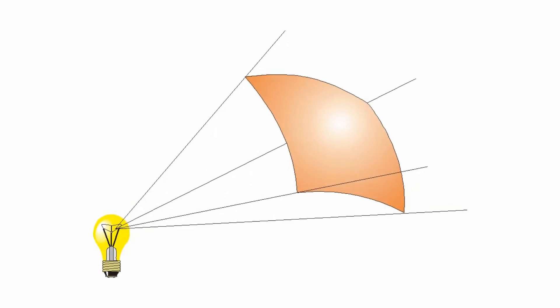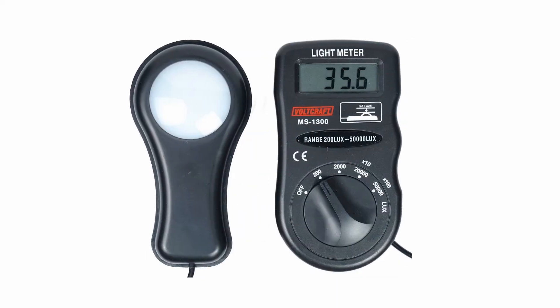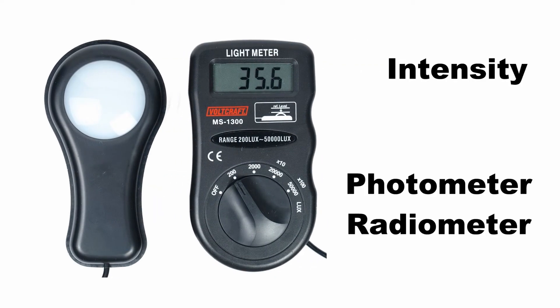The next measurement is intensity. Intensity is a measurement of the amount of light radiated in a given direction. The direction is expressed as a solid angle. The unit of solid angle is a steradian. Intensity is measured with a photometer for photometric readings or a radiometer for radiometric readings.